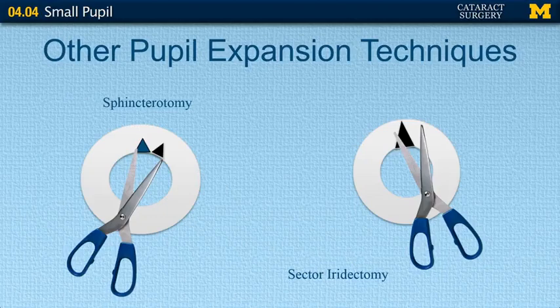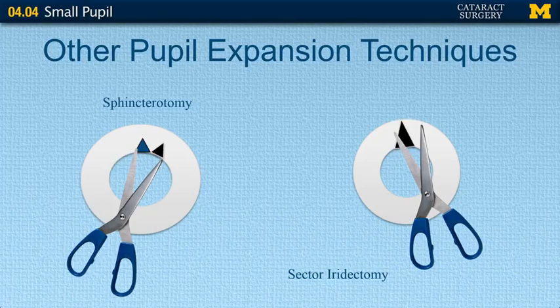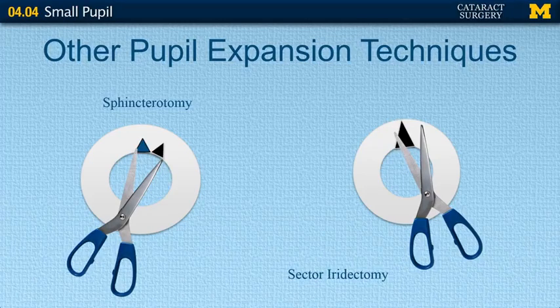Other pupil expansion techniques that tend not to be used as much anymore include removing a portion of the iris tissue. A sphincterotomy creates small cuts in the pupillary border to physically enlarge the pupil. A sector iridectomy removes a piece of the iris tissue to enlarge the pupil size. These techniques are more of a last resort because they will physically affect the appearance of the pupil afterwards.